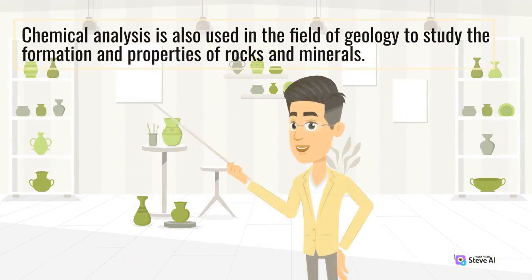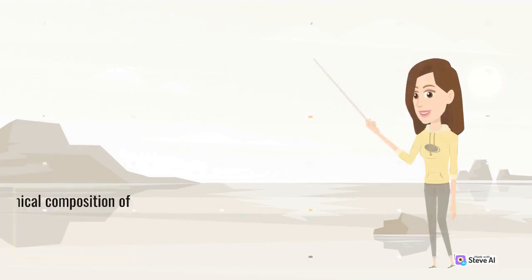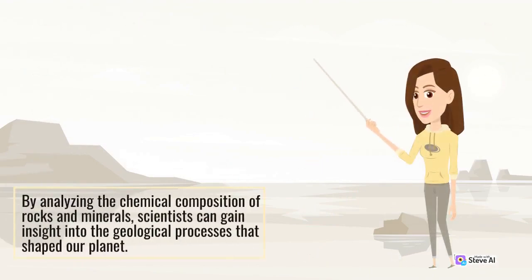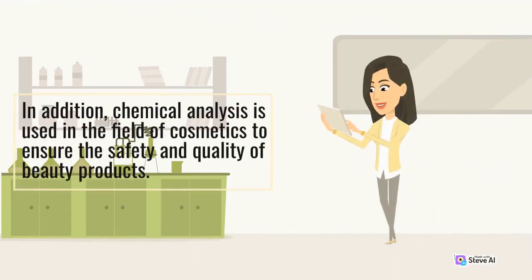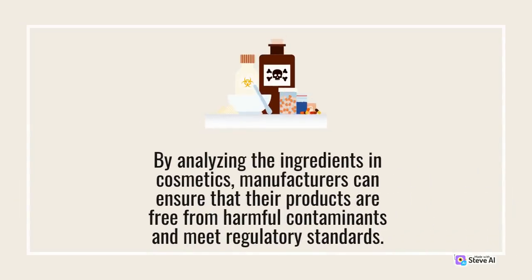Chemical analysis is also used in the field of geology to study the formation and properties of rocks and minerals. By analyzing the chemical composition of rocks and minerals, scientists can gain insight into the geological processes that shaped our planet. In addition, chemical analysis is used in the field of cosmetics to ensure the safety and quality of beauty products. By analyzing the ingredients in cosmetics, manufacturers can ensure that their products are free from harmful contaminants and meet regulatory standards.